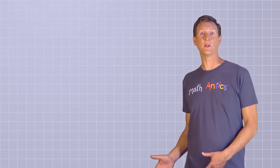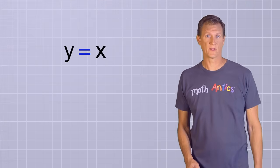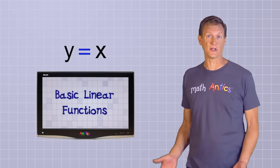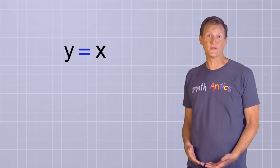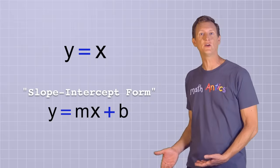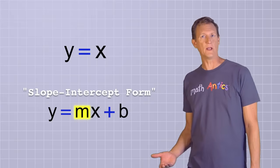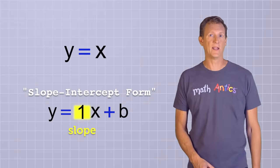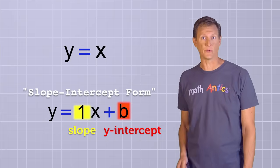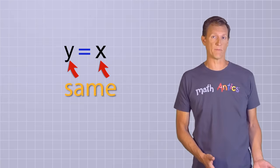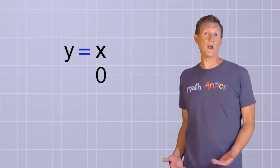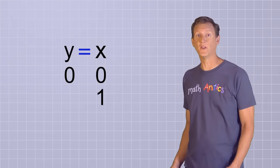To answer that question, let's first start with the very simple equation, y equals x. If you watched our video called Basic Linear Functions, you'll remember that y equals x is just a special case of the slope-intercept form of a line, where m equals 1 and b equals 0. This equation tells us that whatever value x is, y must be the same. If x is 0, then y is 0. If x is 1, then y is 1.